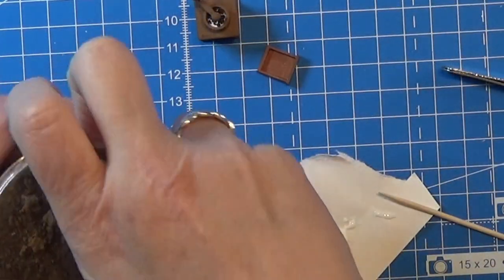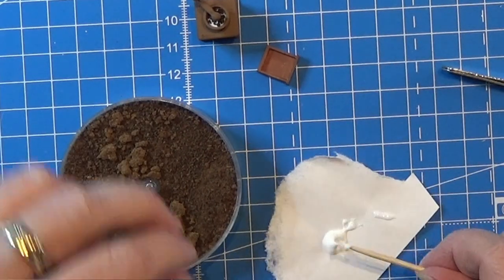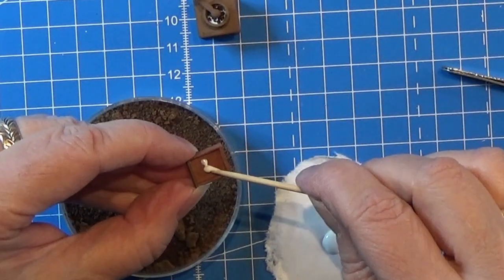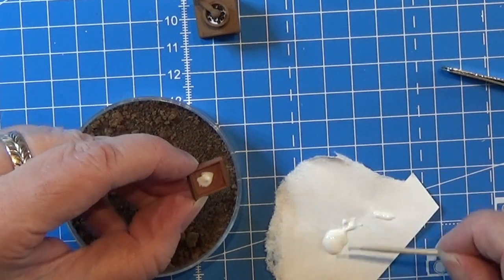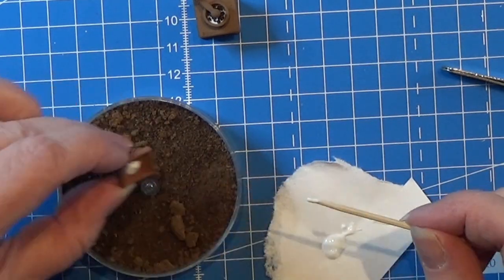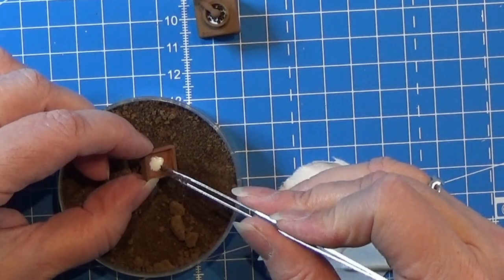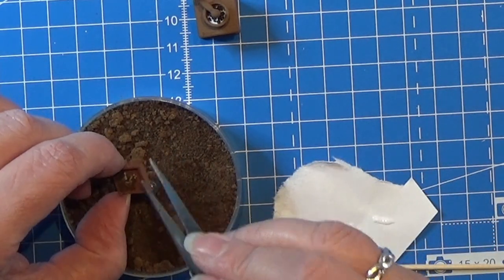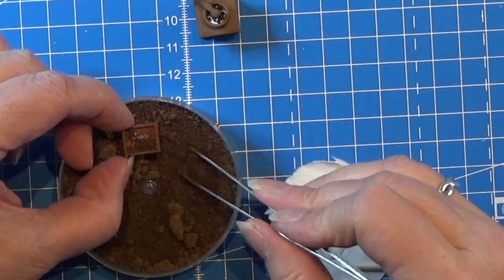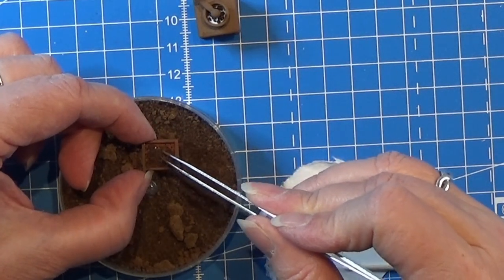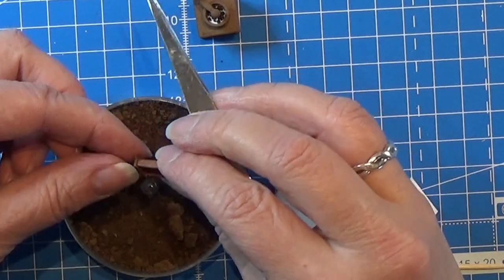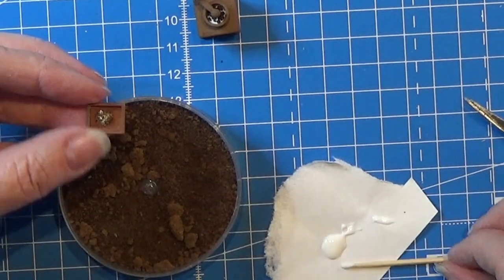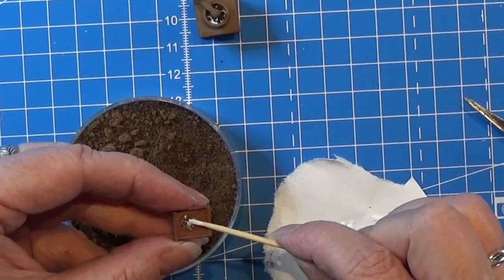I have some coffee grounds that I have dried up in my oven. I'm just putting a tiny bit of glue into the drawer that we have made, and I'm going to glue some of this coffee grounds in there so that it looks like this little coffee grinder has been working today. Then I'm just placing everything together and we are done.